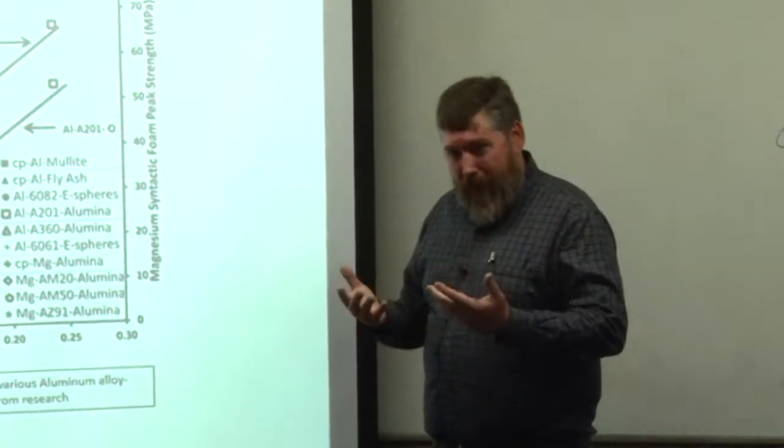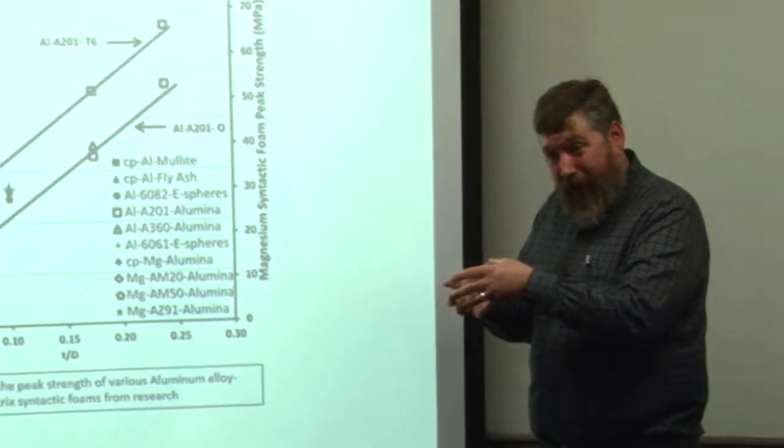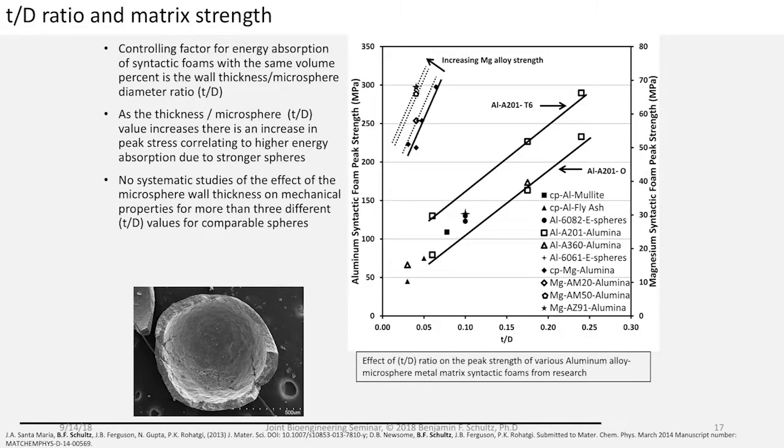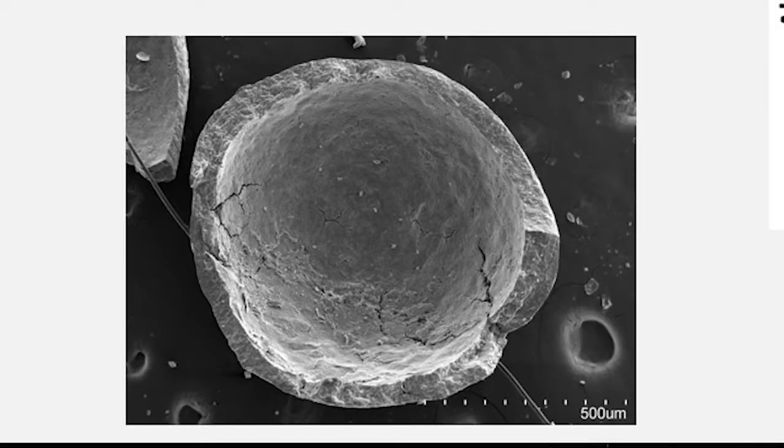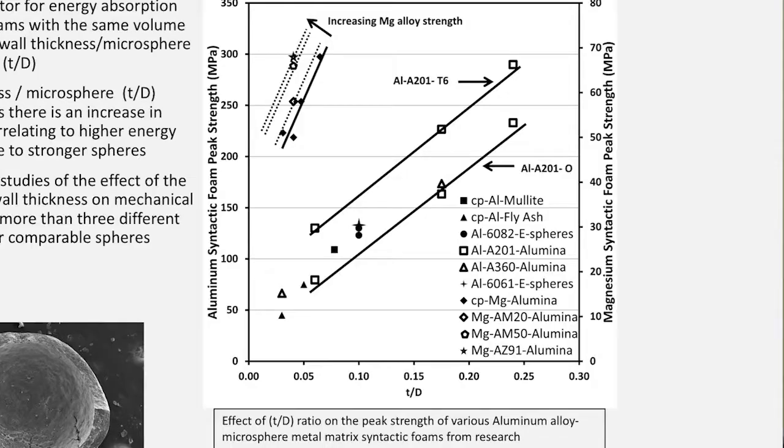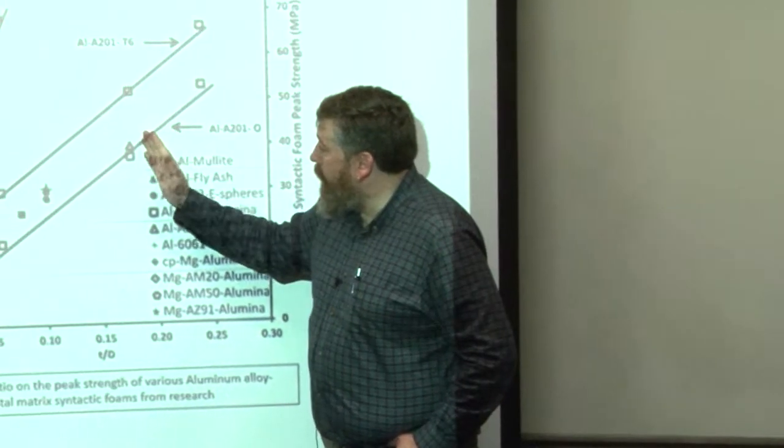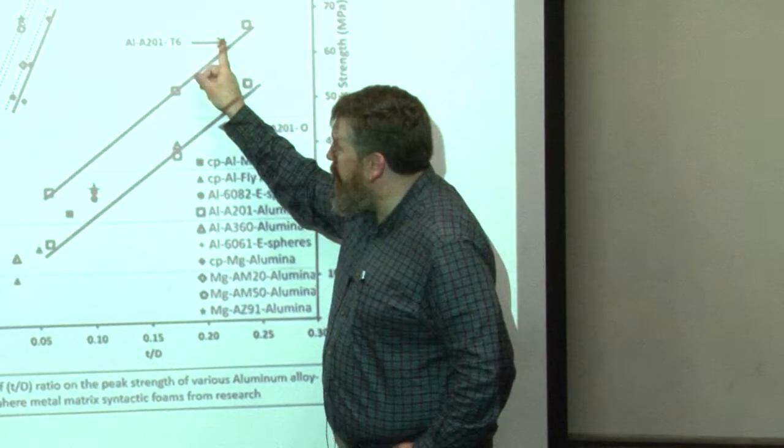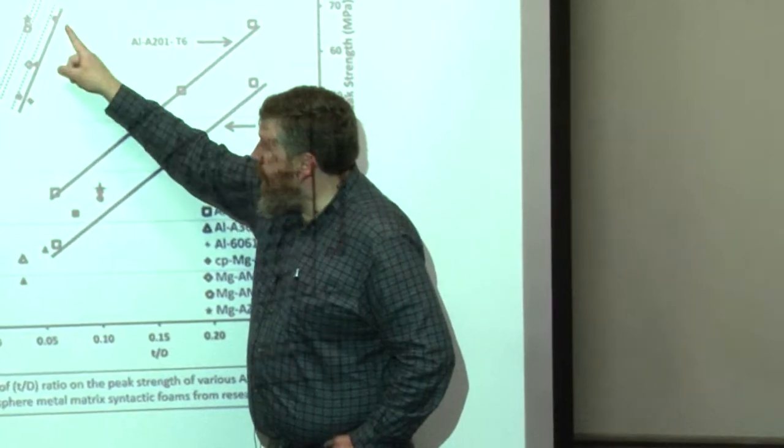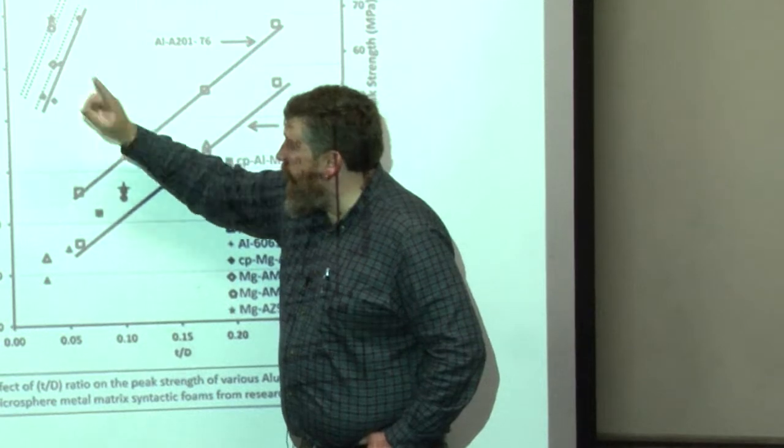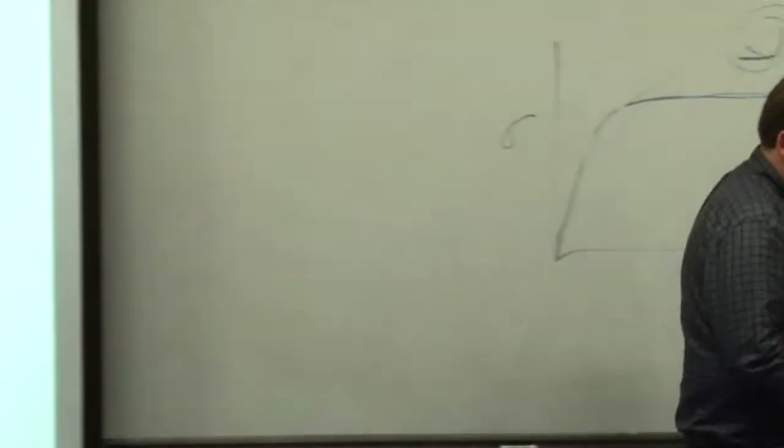So how can we design better composites? One of the ways is selecting high quality materials to go into those composites. Another way is to look at things like the structure of these spheres and control the thickness and the diameter of the sphere. If you plot the peak strength versus the T by D ratio which is the thickness by diameter ratio, we get some plots that look like this where as you increase the T by D ratio your peak strength goes up. Also as you increase the strength of the alloy that you're working with your peak strength bumps up. Same thing for magnesium alloys.